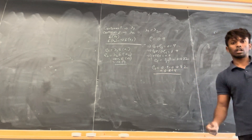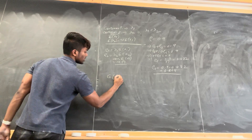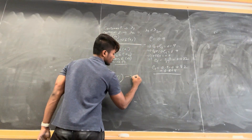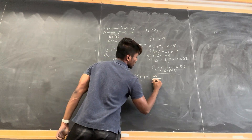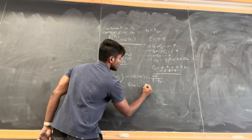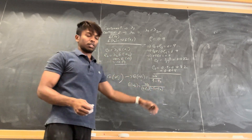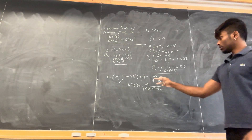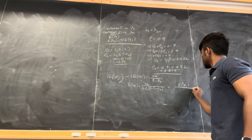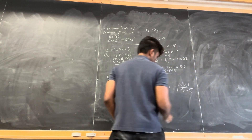Now we have the load coefficients for both customers. We need the class expected waiting times E[w_j]. There are two classes: E[w_1] = w0 / (1 − ρ_1), and E[w_2] = w0 / ((1 − ρ_1)(1 − ρ_1 − ρ_2)), which is cumulative. So E[w_2] = E[w_1] / (1 − ρ_1 − ρ_2), and since 1 − ρ_1 − ρ_2 = 1 − ρ, this simplifies to E[w_2] = E[w_1] / (1 − ρ).